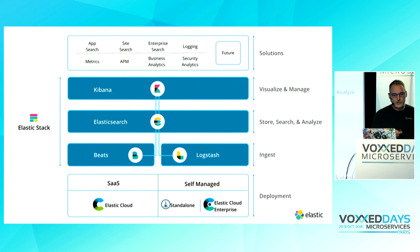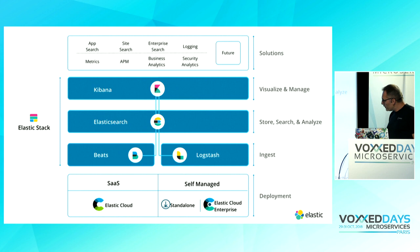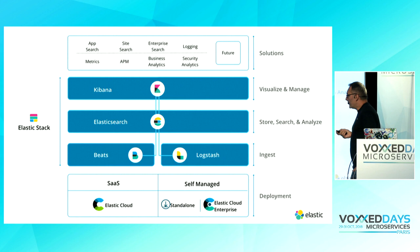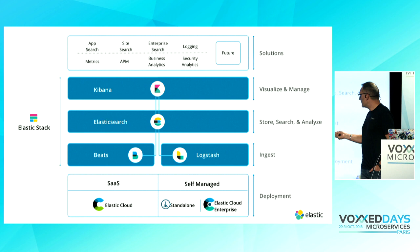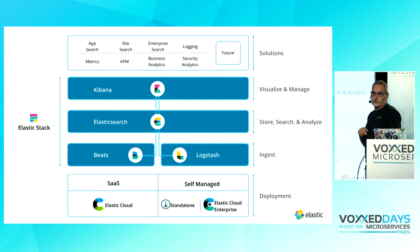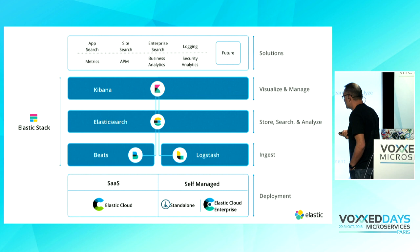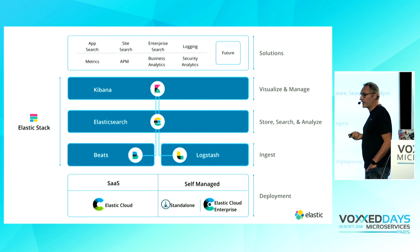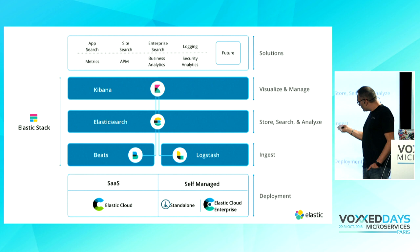On the ingest layer, we have two kinds of components. We have the Beats components — Beats are agents you put on your machine responsible to collect data and ship it to Elasticsearch where it's indexed. We also have Logstash, which is an ETL: you extract from a source, transform the data on the fly, and load it to a destination — it can be Elasticsearch, S3 for archiving, or many other things. So you can read from Beats, send to Logstash for advanced processing, then send to Elasticsearch. All of this is available for free.